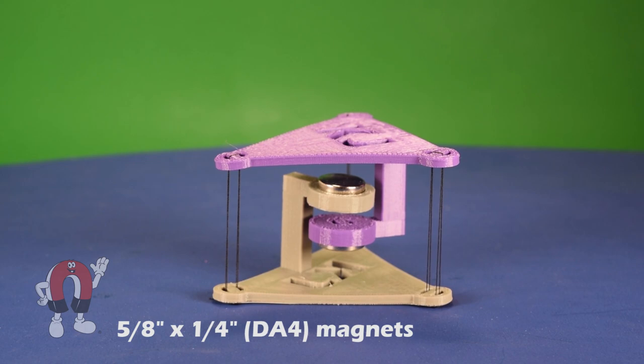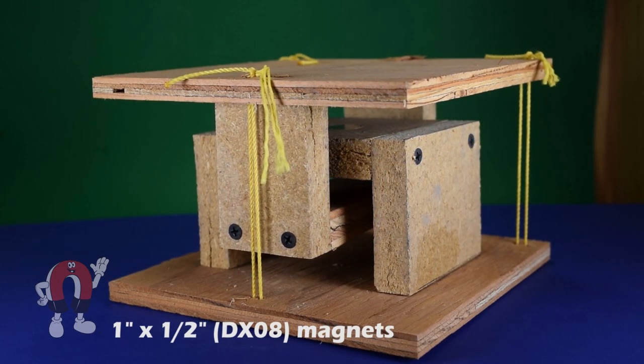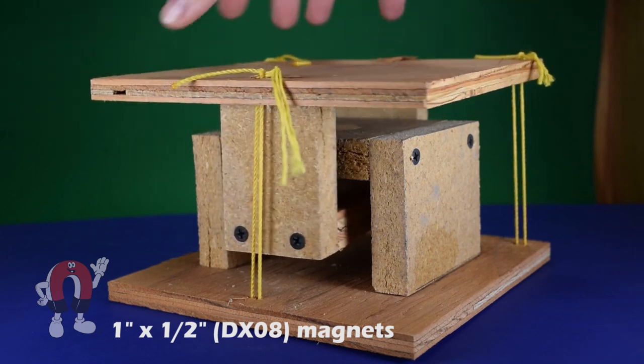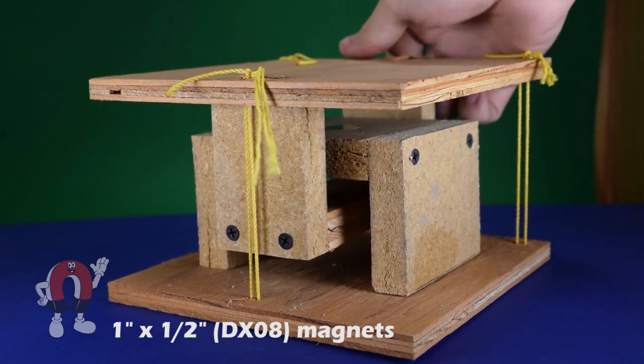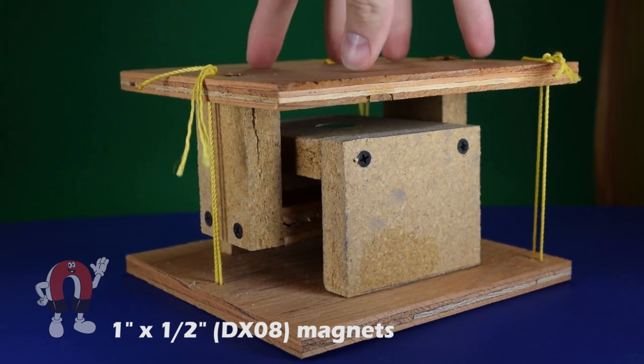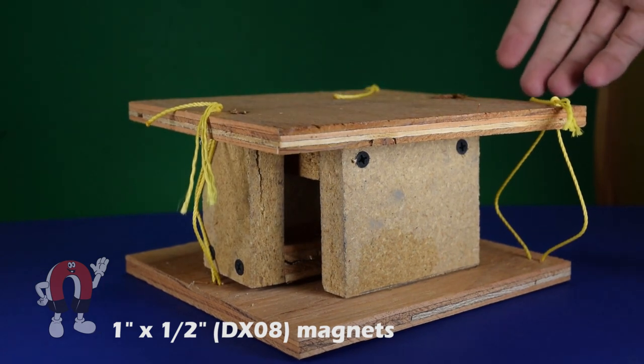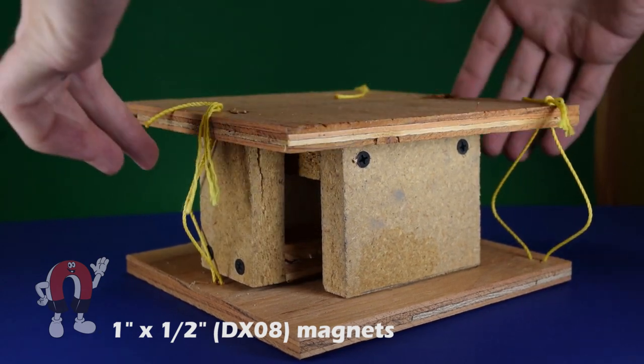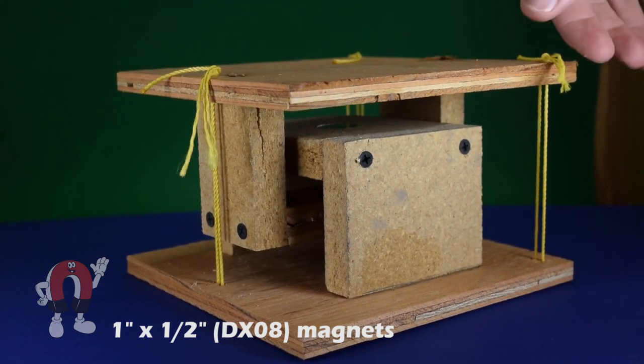Naturally, we couldn't resist building a larger one. This example, built from scrap wood, used a pair of stronger 1 inch diameter by 1/2 inch thick discs. As we've assembled it here, it doesn't hold up too much weight. That's because we tied the strings shorter, aiming for a larger gap between the magnets to be more dramatic.